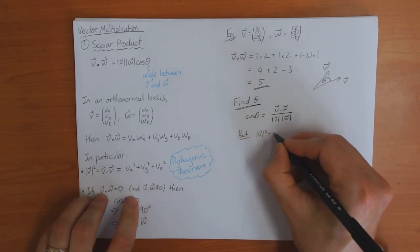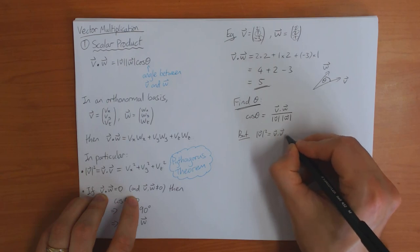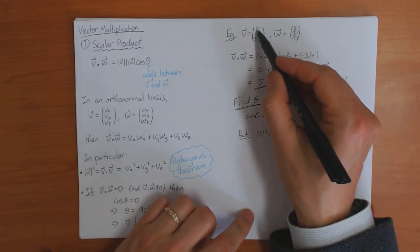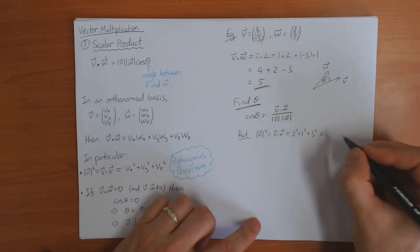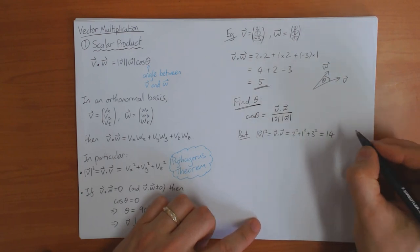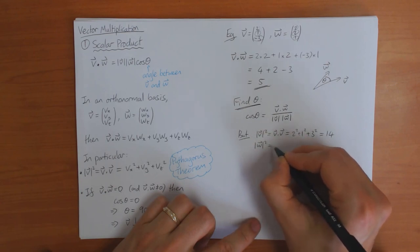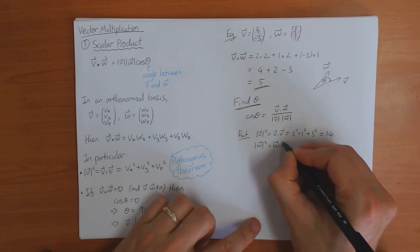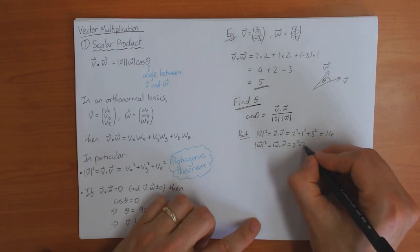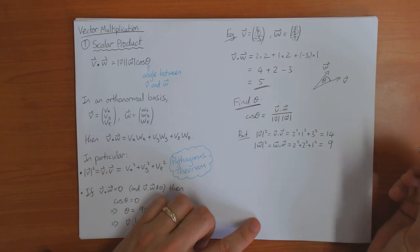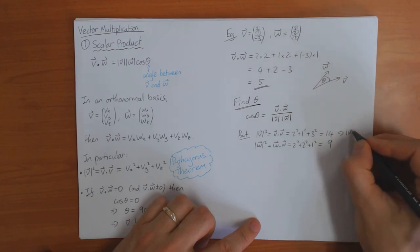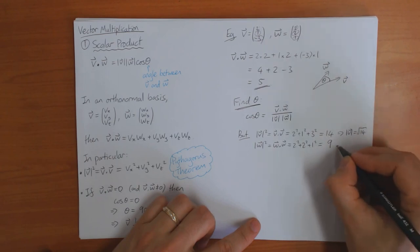The length of v squared is v dot v, which is two squared plus one squared plus three squared, which is fourteen. And the length of w squared is w dot w, which is two squared plus two squared plus one squared, which is nine. So from these we get that the length of v is square root of fourteen. And the length of w is three.